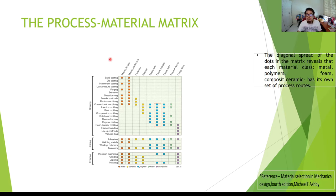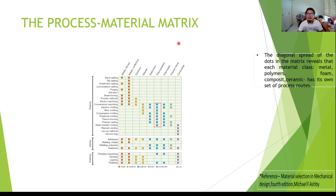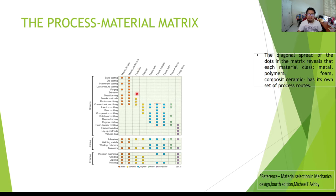This is the process-material matrix. It classifies what materials can be used for which processes. For example, ferrous metals can use sand casting, investment casting, forging, sheet forming, powder methods, and conventional machining, but not extrusion or die casting. Non-ferrous metals have all those options and more. For ceramics, you can use powder methods and electro-machining, but not injection molding or blow molding.